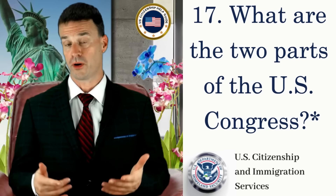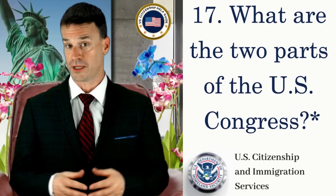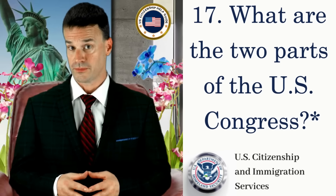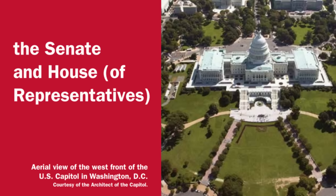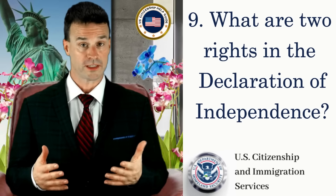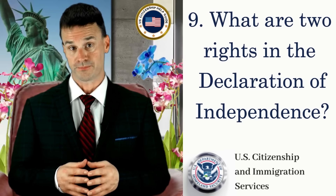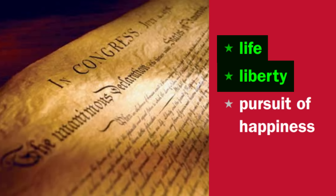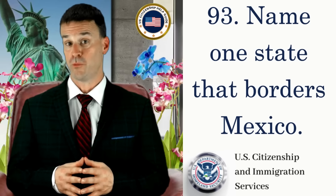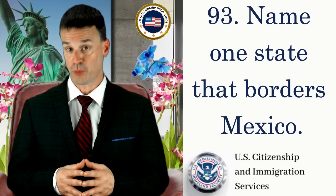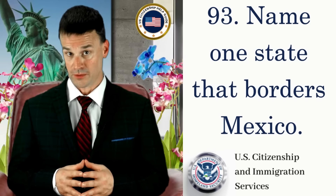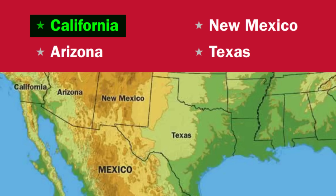What are the two parts of the U.S. Congress? The Senate and House of Representatives. What are two rights in the Declaration of Independence? Life, liberty. Name one state that borders Mexico. California.